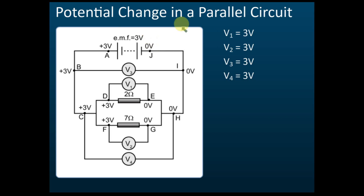Let's look at potential change in a parallel circuit. Say the EMF is 3 volts — we can assume this point is positive 3 volts and this point is 0 volts, so the potential difference is 3 volts. If you connect a voltmeter from this point to this point, the reading is 3 volts. From A to B, the potential remains the same — 3 volts — because there's no resistance.